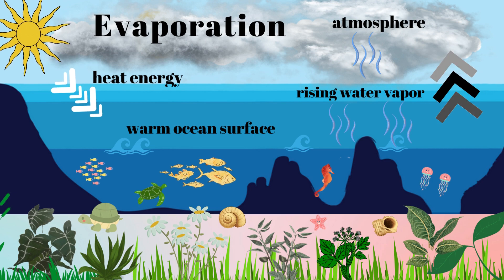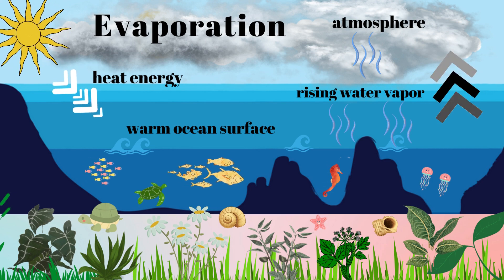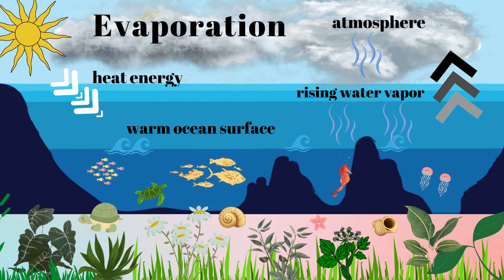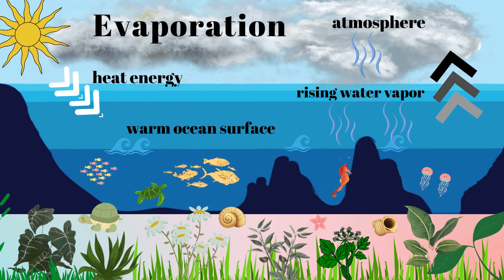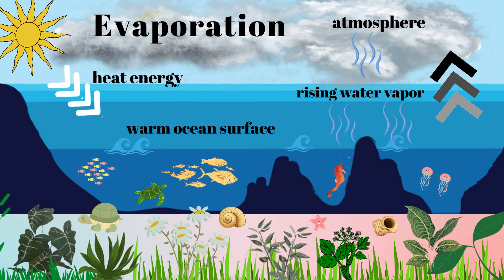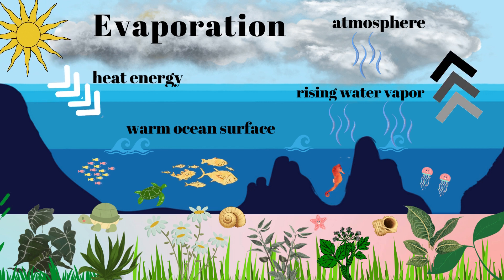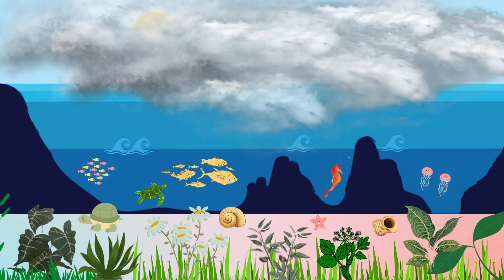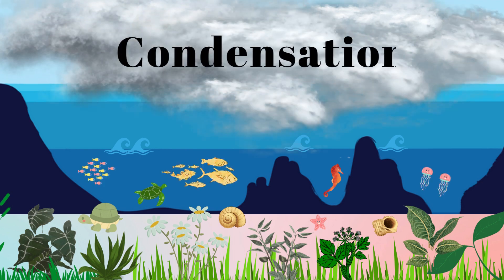Water evaporates from the surface of the Earth into the atmosphere. This process is called evaporation. As water evaporates, it rises into the atmosphere and condenses into clouds. This process is called condensation.